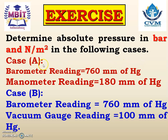Case A: barometer reading is 760 millimeter of Hg and manometer reading is 180 millimeter of Hg. Case B: barometer reading is 760 millimeter of Hg and vacuum gauge reading is 100 millimeter of Hg.